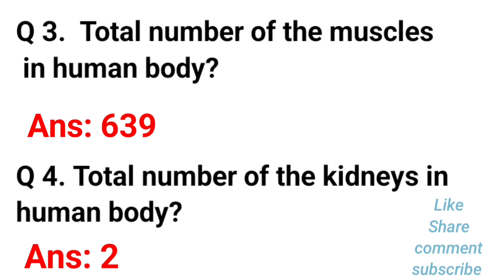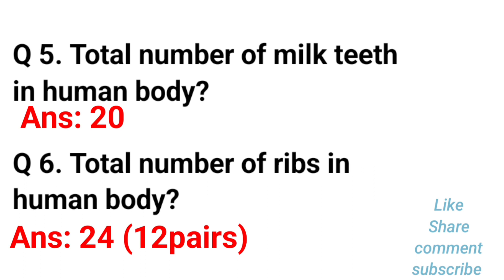The total number of muscles in the human body is 639. The total number of kidneys in the human body is 2. The total number of milk teeth in the human body is 20. The total number of ribs in the human body is 24, that means 12 pairs.